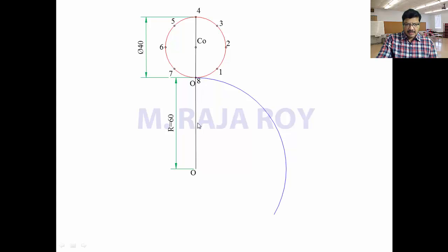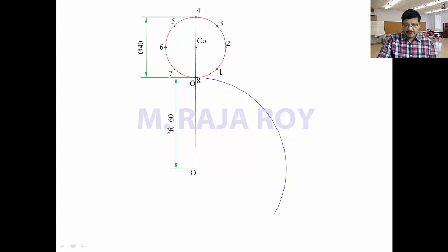The easiest approach is starting with the vertical position — it is easy to divide the circle into 8 equal parts if you start like this. If you take it in the inclined position, it is somewhat difficult. Now you have to find theta: θ = 360° × (r/R) = 360° × (20/60). Calculate the theta value and mark this angle here to find the other end of the arc. Theta equals 120 degrees. Arc 120 degrees here will be the other end. Since the circle is divided into 8 parts, you have to divide this arc also into 8 parts.